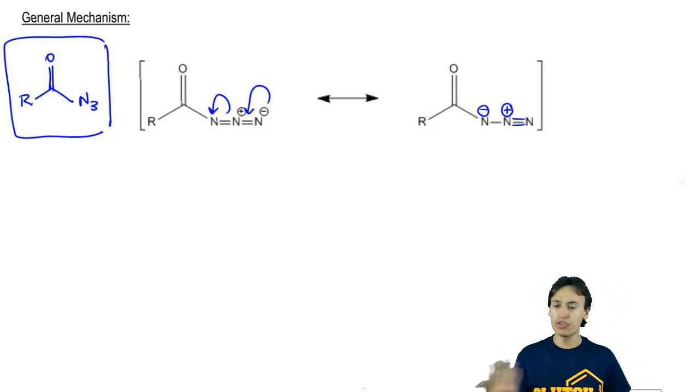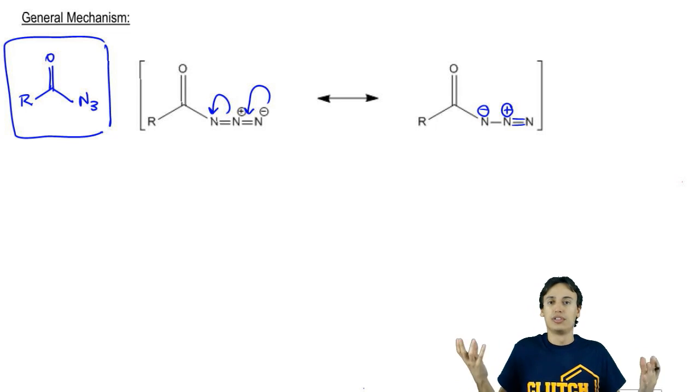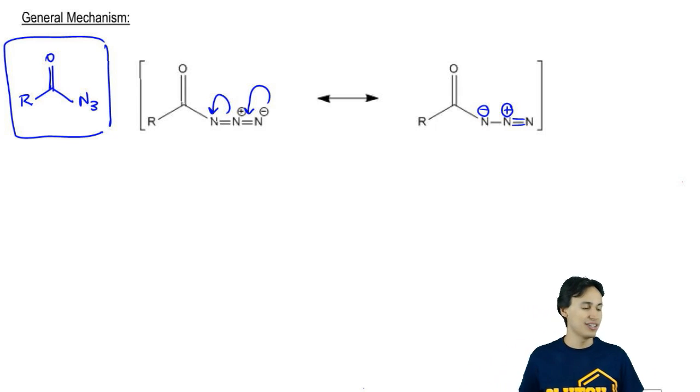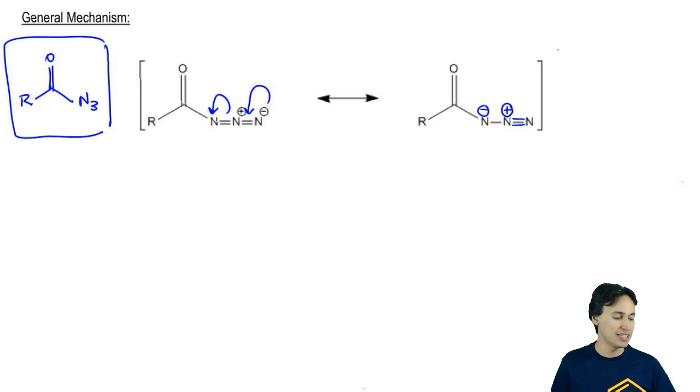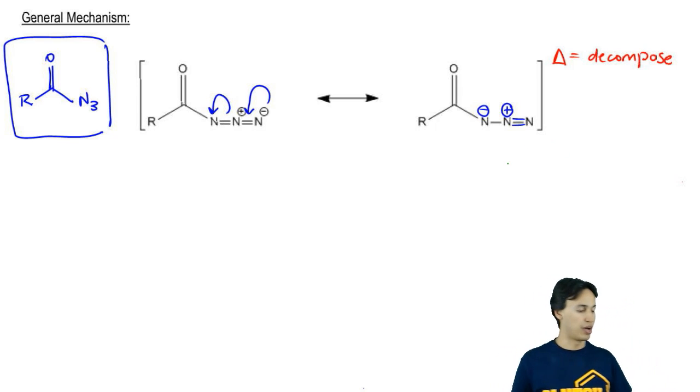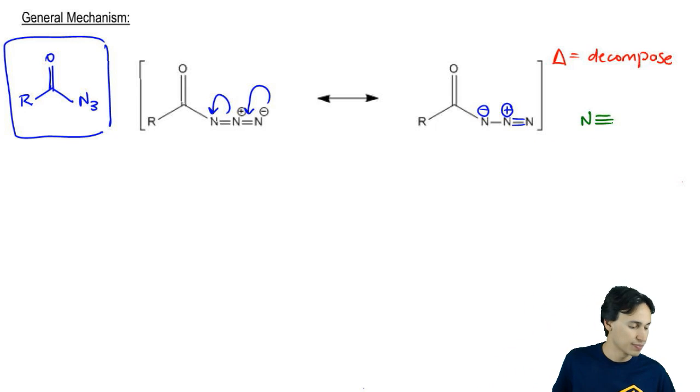Now what's interesting here, guys, is that usually these resonance structures both exist. They're both averaging into the hybrid, but in the presence of heat, one of these resonance structures is going to influence the character of the molecule more than the other. The reason is because we can get a decomposition reaction. Heat is going to make this decompose. The reason is because this resonance structure, the second one, looks a whole lot like N2 gas. N2 gas is just N triple bond N and it composes 78% of the atmosphere.